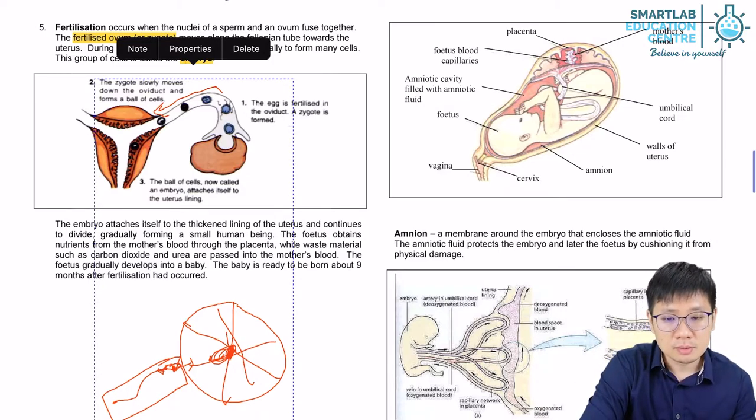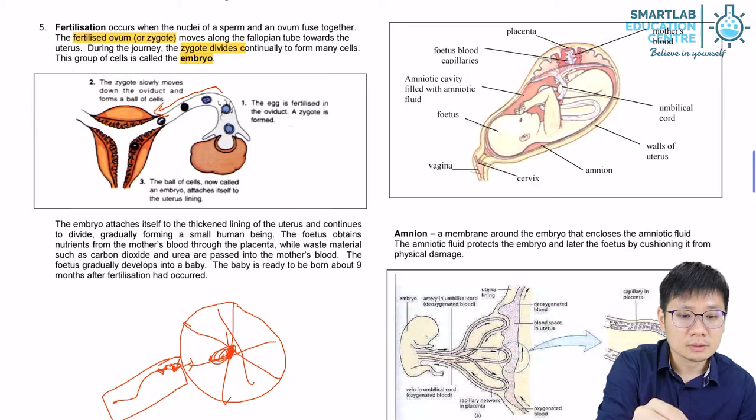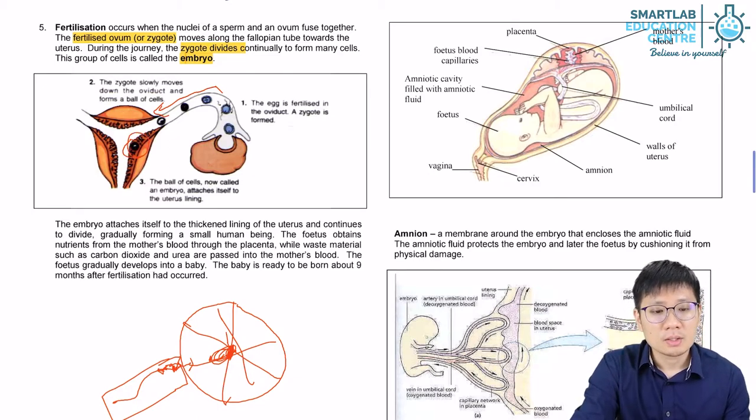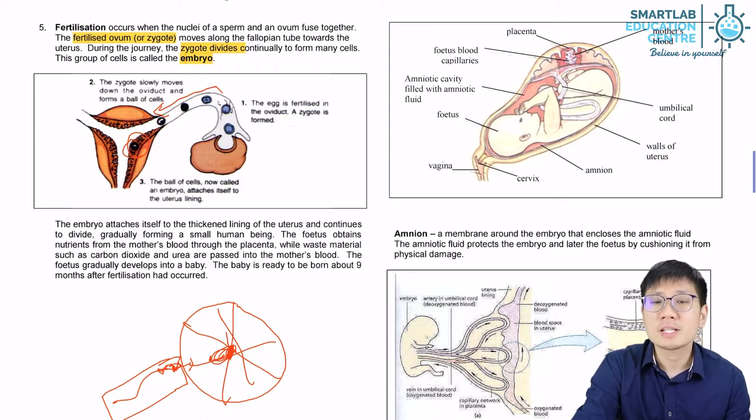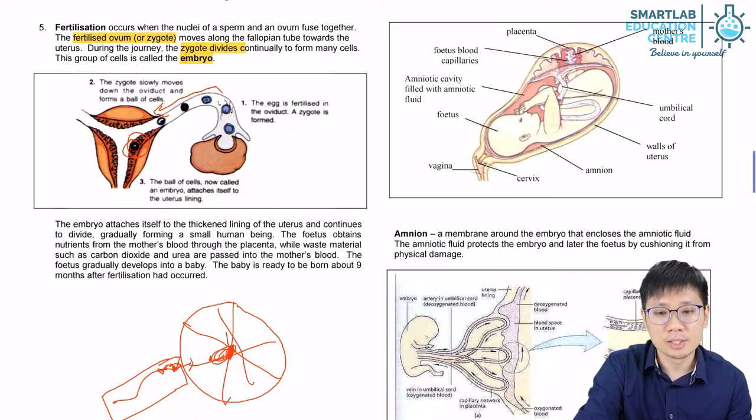Since there was fertilization, the uterine lining will not have broken down. And then it will implant. As you can see over here in this picture, the implantation site is random. We won't know exactly where it implants. But regardless of where it implants, there should be enough blood vessels in the uterine lining by now.